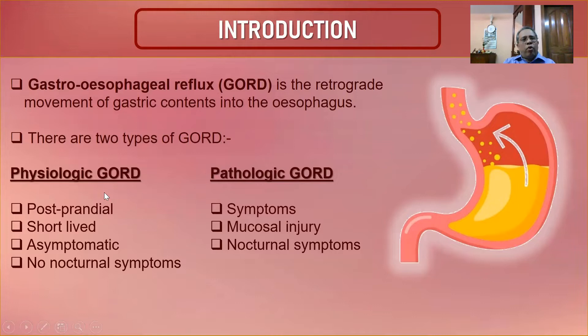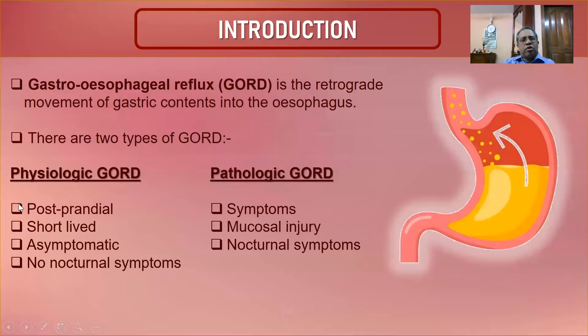Physiological GORD occurs when a large amount of food is taken at once, overfilling the stomach, and some food returns up with gas — known as postprandial reflux. It is short-lived, involves a small amount, is asymptomatic, and has no nocturnal symptoms. It is called physiological GORD.